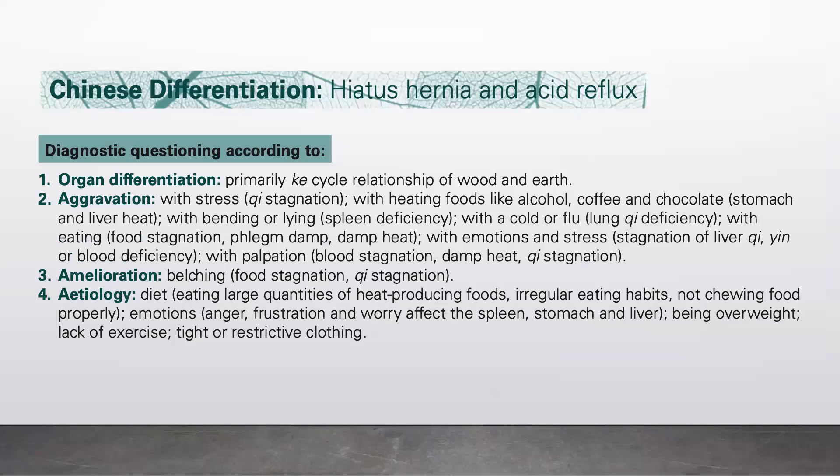Now let's go to the Chinese differentiation of hiatus hernia and acid reflux. Diagnostic questioning according to organ differentiation — this is primarily the Ko cycle, the relationship of wood and earth. According to aggravation: if the condition is aggravated with stress, this is liver chi stagnation.